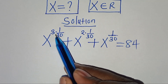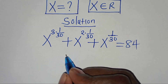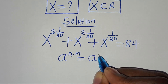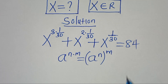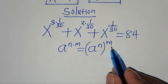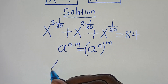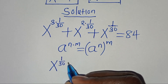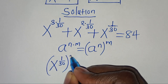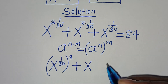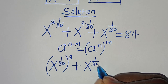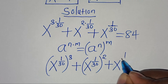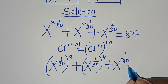Now, x to the power of 3 times 1 over 30 is in the form of a to the power of n times m, which we can express as a to the power of n raised to the power of m. Applying this exponent property, we have x to the power of 1 over 30, all cubed, plus x to the power of 1 over 30, squared, plus x to the power of 1 over 30, equals 84.